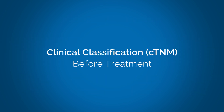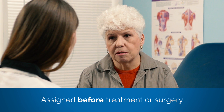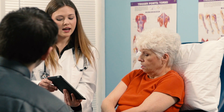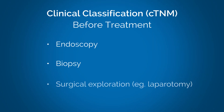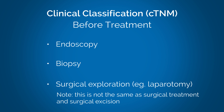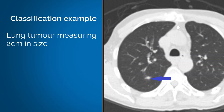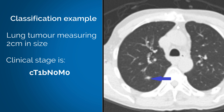Clinical classification before treatment. cTNM is the clinical classification given to tumors; it is assigned before treatment or surgery. Pre-treatment clinical classification is based on evidence acquired before treatment, gathered from physical examination and procedures including endoscopy, biopsy, and surgical exploration — for example, laparotomy. Note: this is not the same as surgical treatment and surgical excision. This classification helps to select and evaluate the type of therapy to be used. For example, a patient has a lung tumor measuring 2 cm in size with no evidence of lymph node involvement or metastases. The clinical stage is cT1bN0M0, or clinical stage 1A2.